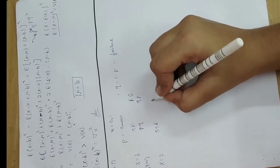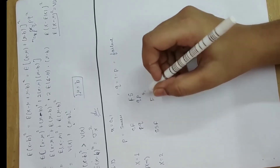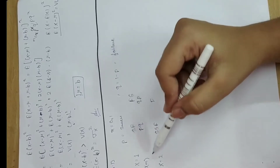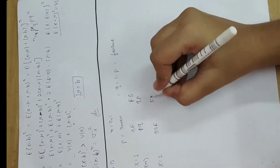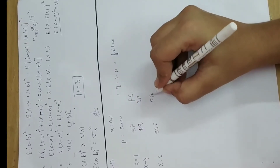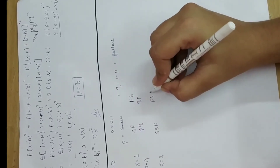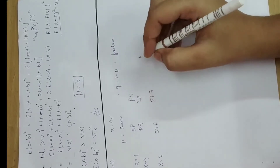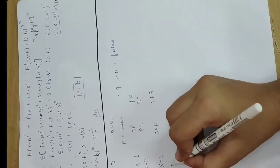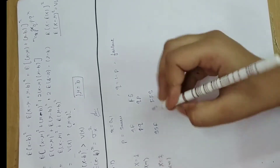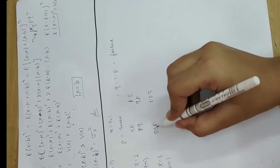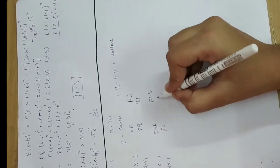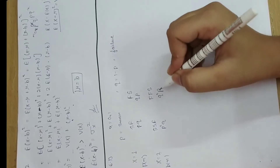In the first attempt we get failure, in the second attempt we get failure, and in the third attempt we get success. So the probability pattern becomes: success-success gives p squared into q, and failure-failure gives q squared into p.